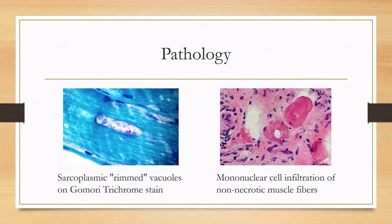The clinical features may not always clinch the diagnosis, so in those cases, muscle biopsy is done. It will show sarcoplasmic rimmed vacuoles on Gomori trichrome stain, and also mononuclear cell infiltration of non-necrotic muscle fibers. Here you can see a rimmed vacuole, and here the mononuclear cell infiltrates.